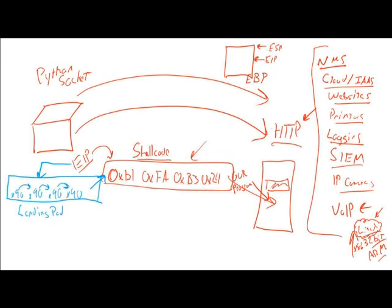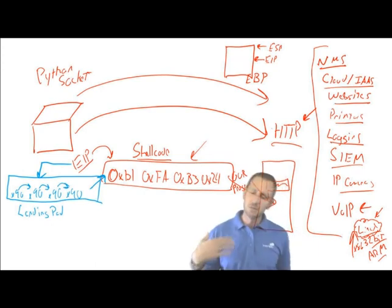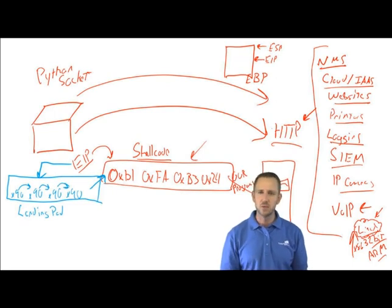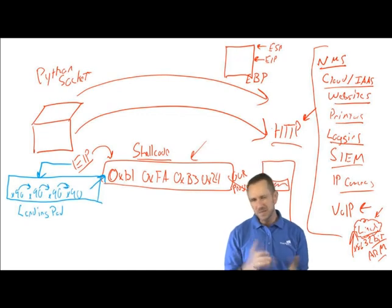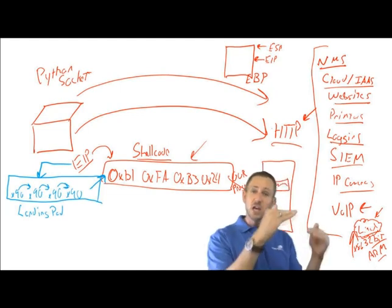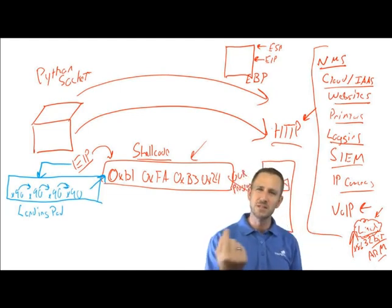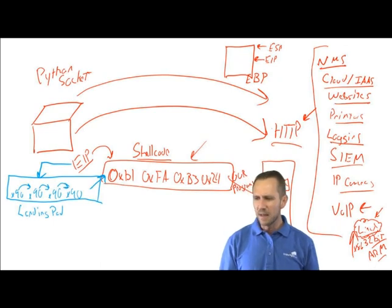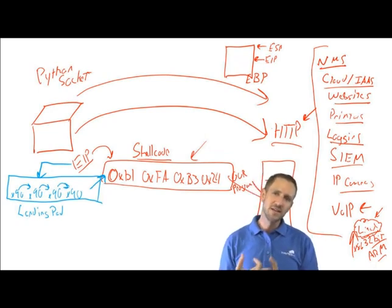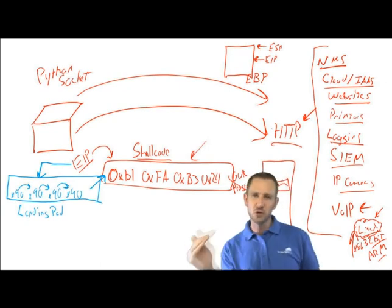Prior to Metasploit, what used to happen is you'd get exploit code from the internet — maybe from Full Disclosure, one of the mailing lists where people would dump security vulnerabilities, sometimes without checking with the manufacturer first. They'd say 'I found a bug in a program, it works like this, here's the code' — called proof of concept code, or POC. It would just be a C program with everything in it that should work right off the bat.